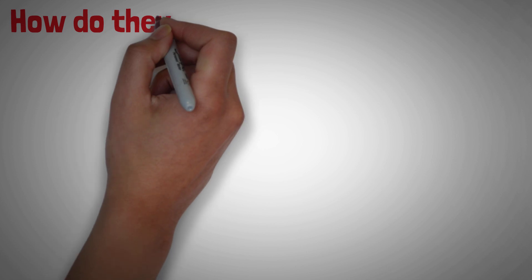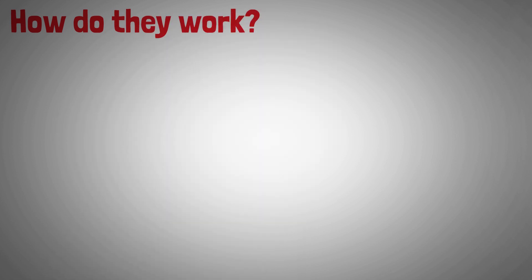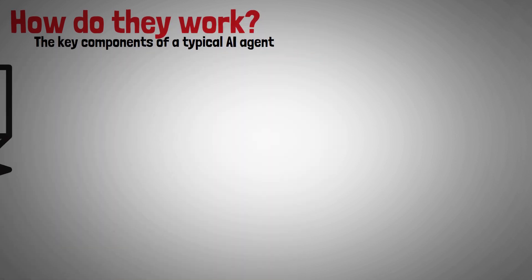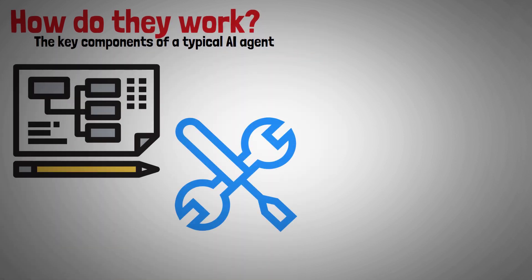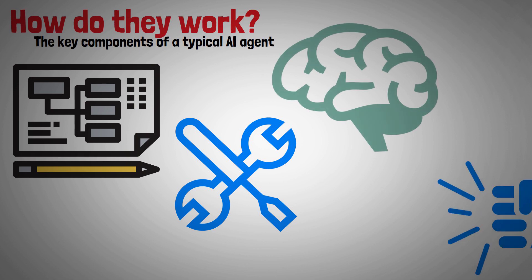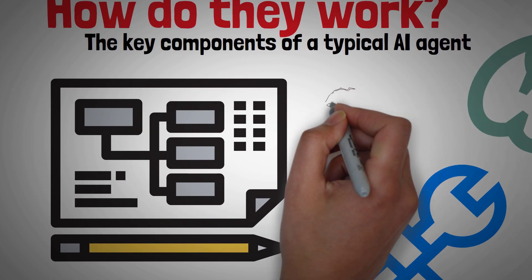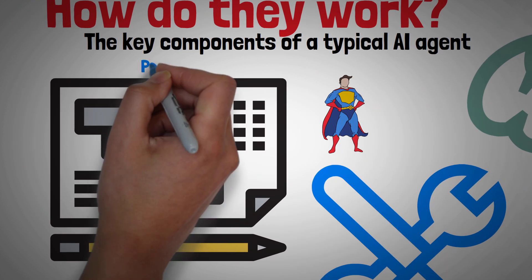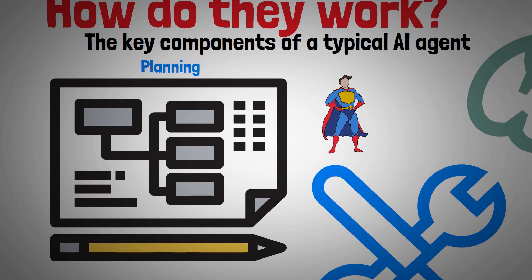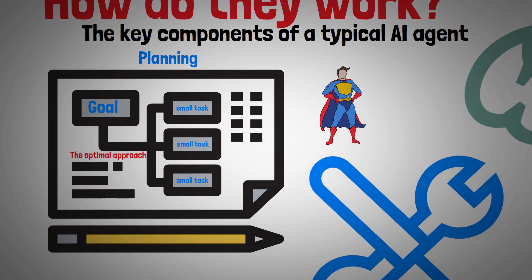But how does this happen? Let's explore the key components of a typical AI agent, such as planning, tools, memory, and actions. Planning: every superhero needs a plan. AI agents start with a goal and create a detailed plan, breaking it down into manageable tasks. They come up with the optimal approach for each task, minimizing the need for human intervention.